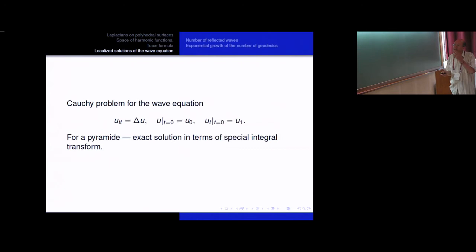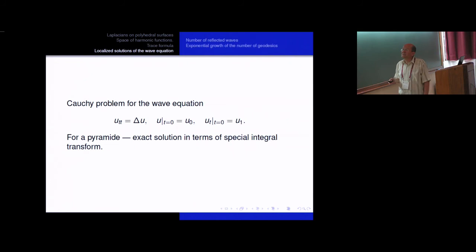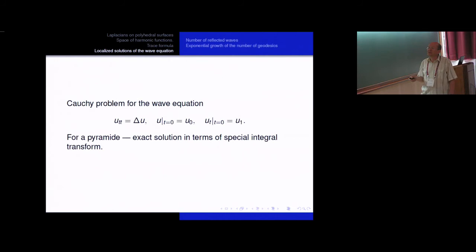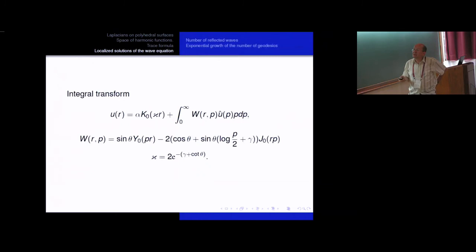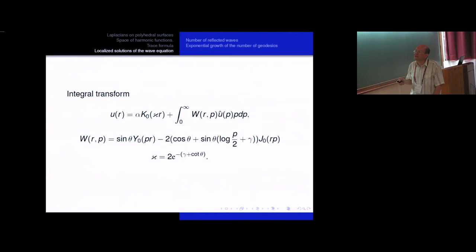Now I am going to say a few words about solutions of the wave equation on this polyhedron. In the simplest case when our polyhedron is just an infinite pyramid — a pyramid with only one vertex — we can write down a more or less explicit formula for the solution of the Cauchy problem, which is an analog of the Kirchhoff or Poisson formula for the standard wave equation. To do this, we obtained a special integral transform involving K₀, Y₀, and G₀ which are Bessel functions. This is essentially a spectral decomposition of our Laplacian, and in terms of this integral transform we can write the explicit formula for the solution — though I will skip it as it is rather large.